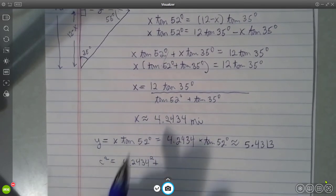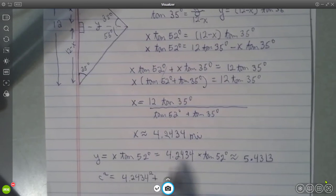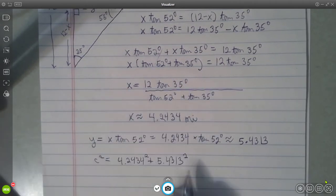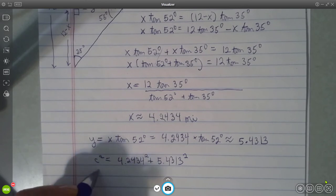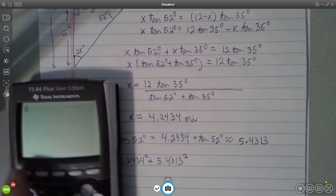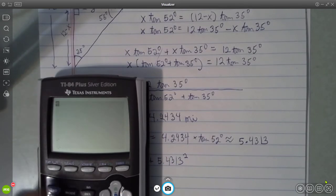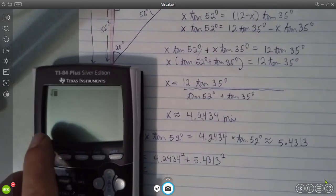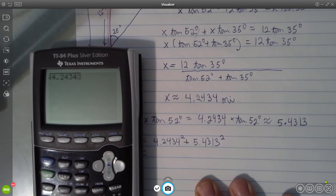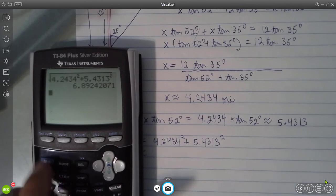The y is what we computed earlier, 5.4313. And we want to square that. And then you just take the square root of both sides with your calculator to get a good approximation to c. So we want the square root of 4.2434 squared, plus 5.4313 squared, and that turns out to be about 6.8924.